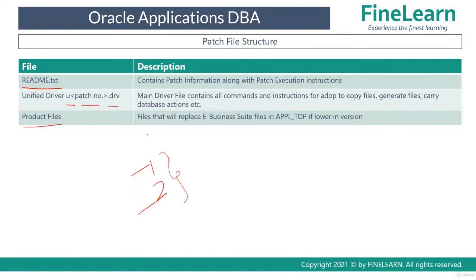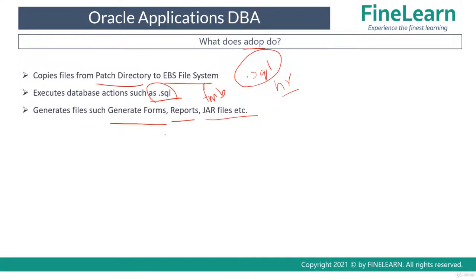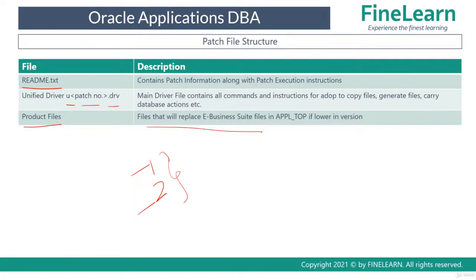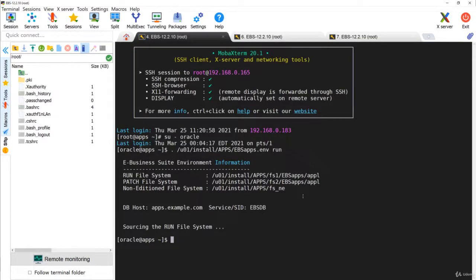There are also product files in the patch. All new features or bug fixes come via new files, and these are copied by ADOP from the patch to the EBS file system. These files are present in the patch top directory. We'll now look at a 12.2.10 release update patch, which you can also download from edelivery.oracle.com. I'll navigate to that specific patch to show the different files present in the 12.2.10 release update.